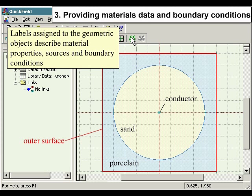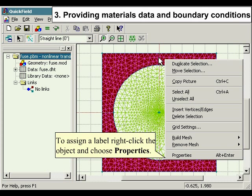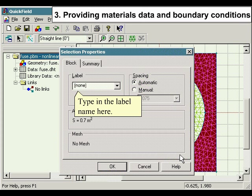Labels assigned to the geometric objects describe material properties, sources, and boundary conditions. To assign a label, right-click the object and choose Properties. Type in the label name here.